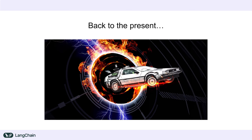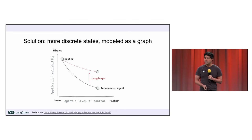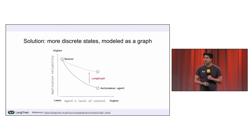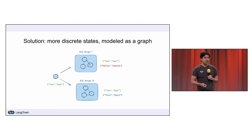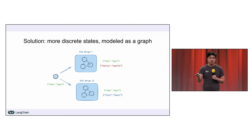Traveling back to the present, we ended up developing a framework called LangGraph. This takes into account the rich area between simple chains and full-on autonomous agents, basically allowing developers to tune the amount of agency versus reliability at each step of a flow. You model your task as a graph defining discrete states that each perform some kind of logic and transitions between these states. You can mix and match between developer-provided rails and agentic decision-making as appropriate.